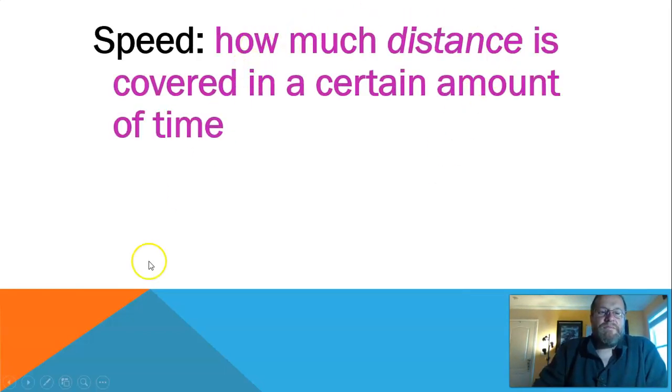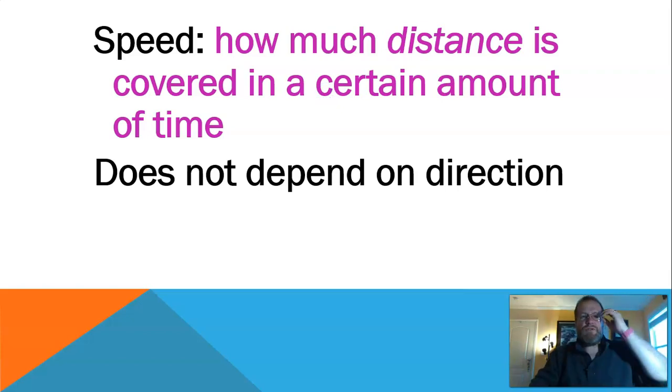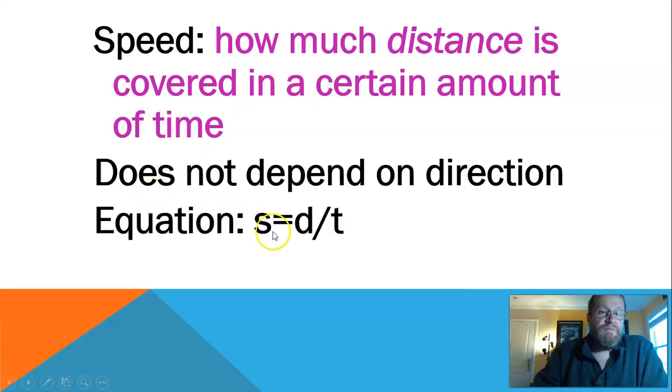Next thing I'll talk about is speed. Speed is defined as how much distance that is covered in a certain amount of time. Pretty straightforward. Doesn't depend on direction. Doesn't matter if you turn. It's just how much ground you covered in a certain amount of time. The equation for speed is distance divided by time. Take a moment, pause, add that to your reference tables.